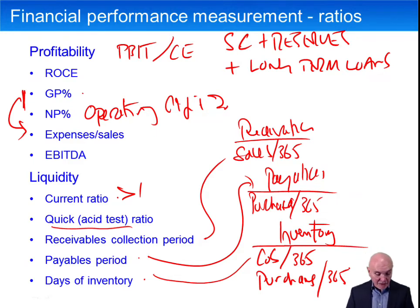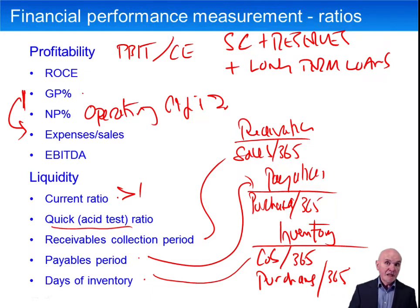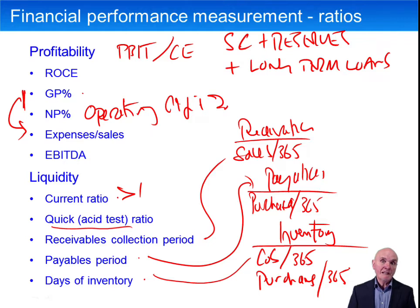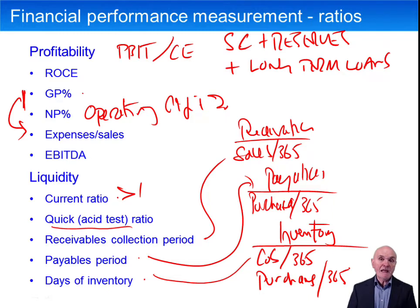People get worried if the receivables collection period goes up — are they losing control of receivables? But it might be a deliberate policy to give more credit, or they may have started selling more overseas where transportation and collection takes longer. If the payables period increases, you don't want to pay too quickly, but paying too slowly can make suppliers nervous — they may stop supplying or require cash up front. Days of inventory increasing could mean a purchasing error or unsellable stock, or it could be a deliberate strategy: gearing up for a big sales push with a particularly full warehouse.